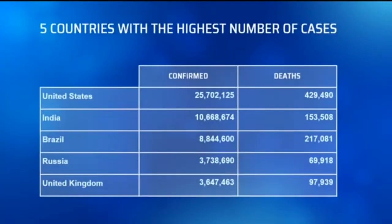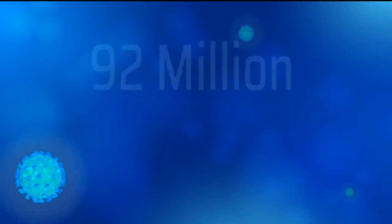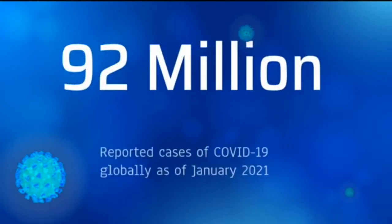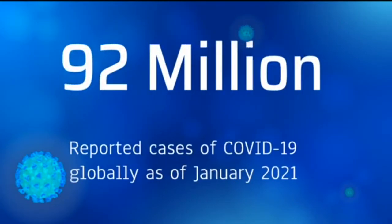Here are the top 5 countries with the highest number of COVID-19 cases: United States, India, Brazil, Russia, and United Kingdom. All in all, there are 92 million reported cases of COVID-19 globally as of January 2021.